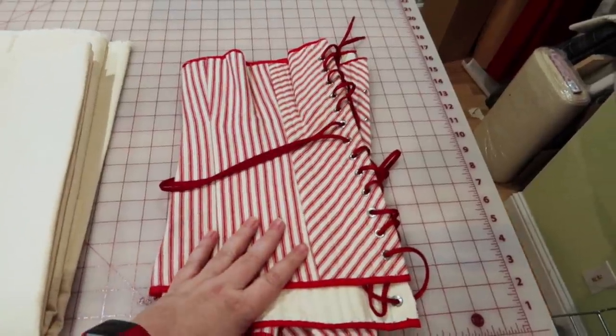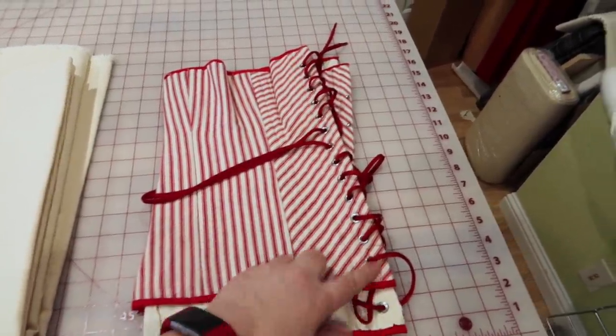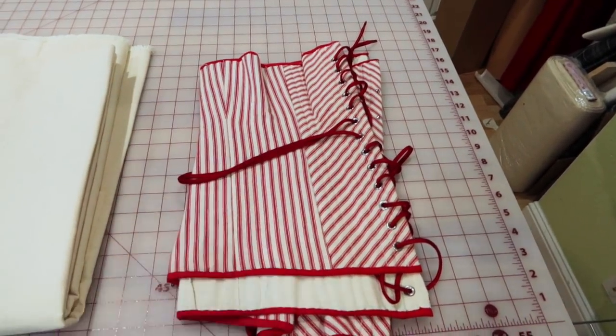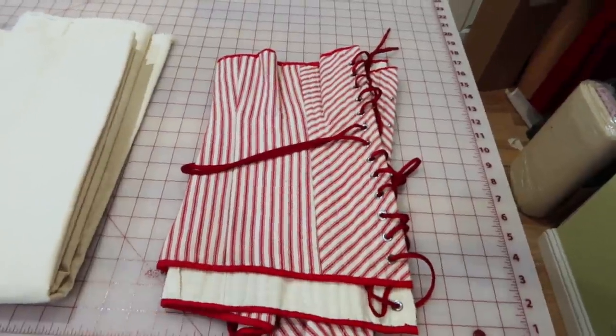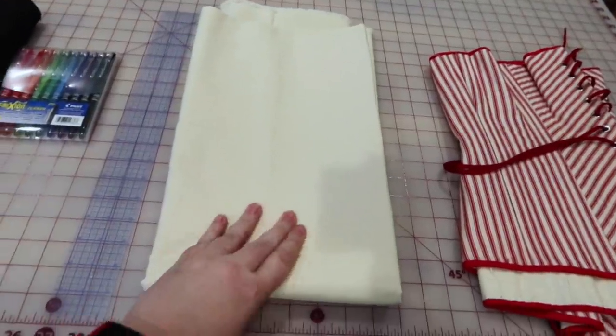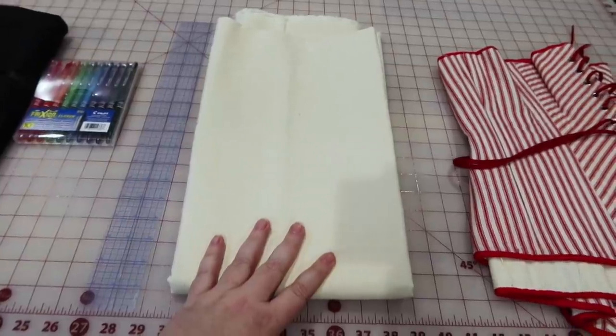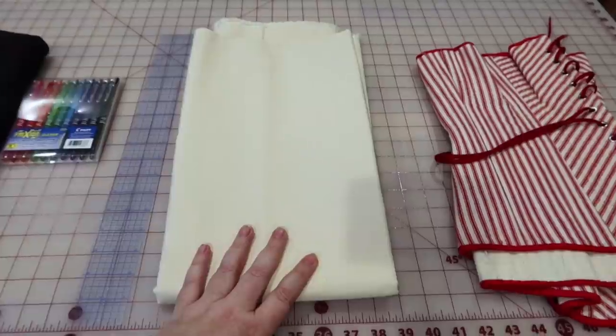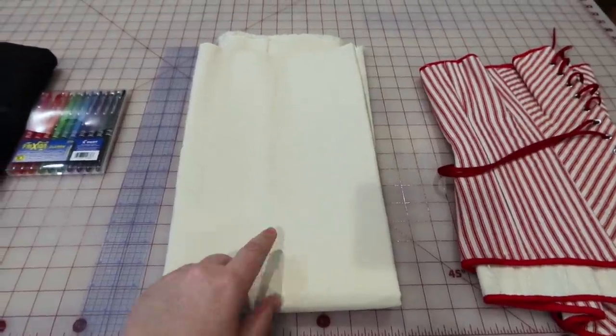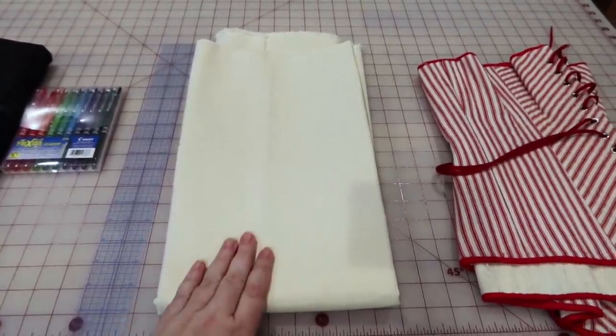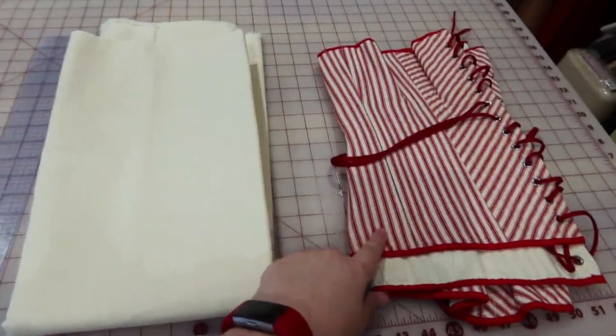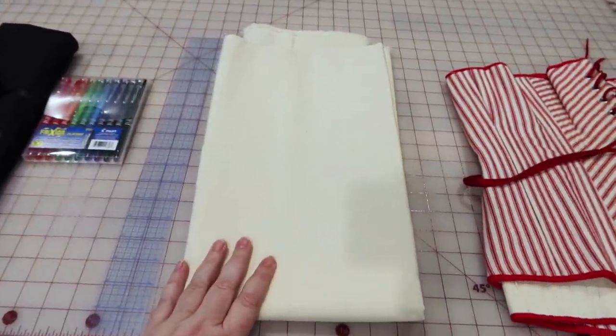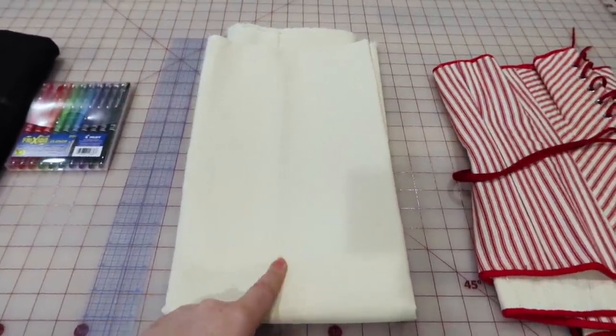I have a previous corset here, but you don't actually need this because I'm just using this to measure how much space you need to do this and I'm going to tell you that information. So you don't need a previous corset. This is coutil, this is what I'm going to use to make these. You can use any strong, non-stretch kind of fabric. I highly recommend something like coutil, double herringbone twill, canvas. This is made out of ticking, but it does have coutil on the inside, but you can absolutely just use ticking.